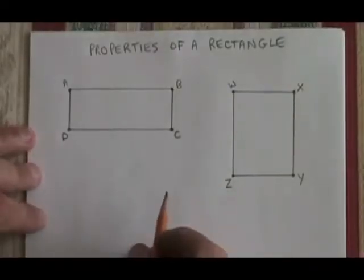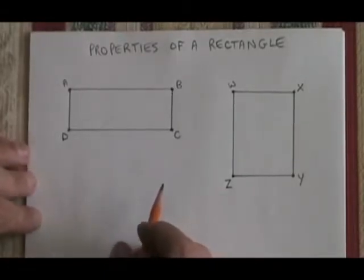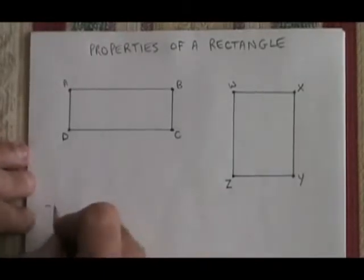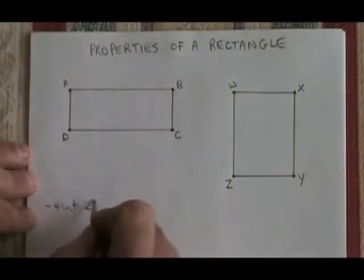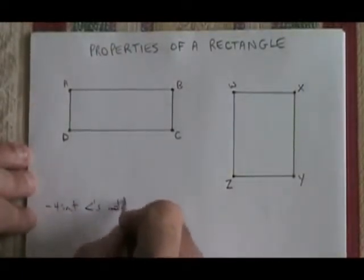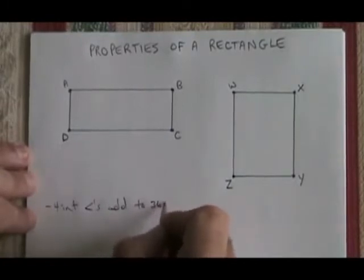The properties of a rectangle are, first of all, a rectangle is a quadrilateral, therefore its four interior angles add up to 360 degrees.